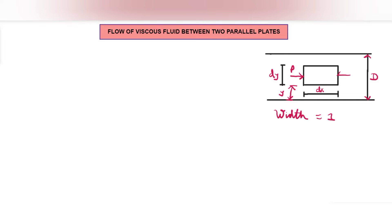On this face of the element, pressure P will act, and on the other face it will be P plus (∂P/∂x)dx. Shear stress will act on the upper face and the lower face of the rectangular element. On the lower face it will be τ, and on the upper face the shear stress will vary with respect to the thickness of the element, so it will be τ plus (∂τ/∂y)dy.